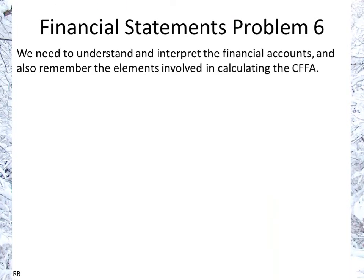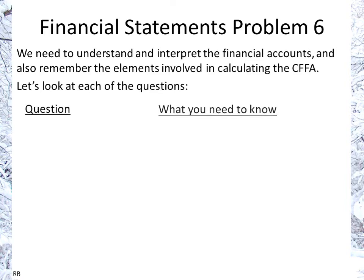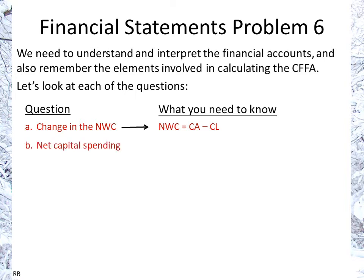We need to understand and interpret the financial accounts and remember the elements involved in calculating cash flow from assets. Let's look at each of those questions. First, net change in net working capital — working capital is calculated as current assets minus current liabilities. Net capital spending is simply the spending or investment in fixed assets, and we have to keep depreciation in mind, so it's not simply the difference in net fixed assets from one year to the next.